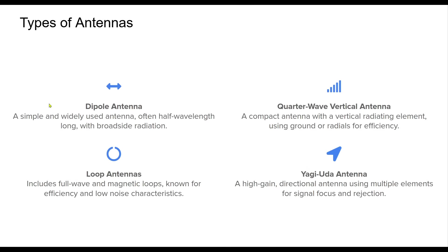There are several different key types of antennas used in radio communications. The dipole antenna is one of the most fundamental, consisting of a conductor split in the middle, commonly a half-wave length long, radiating broadside. The quarter-wave vertical antenna is ideal for space efficiency and often uses a ground plane to enhance performance. Loop antennas, including full-wave and magnetic loops, provide efficient signal reception with reduced noise. Finally, the Yagi antenna is a powerful directional design that utilizes multiple elements to concentrate signals, commonly used for long-distance communication.